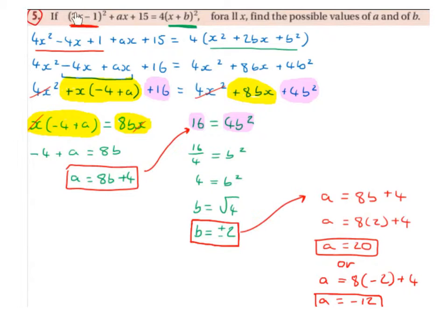So we're going to start by multiplying out the brackets. 2x minus 1 squared becomes 2x minus 1 multiplied by 2x minus 1, which gives us 4x squared minus 4x plus 1. We bring down the ax and the plus 15 and the equals.